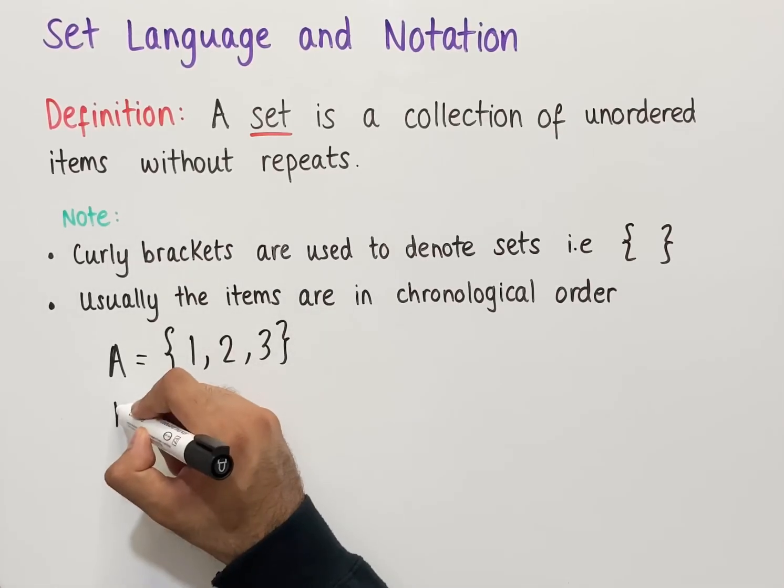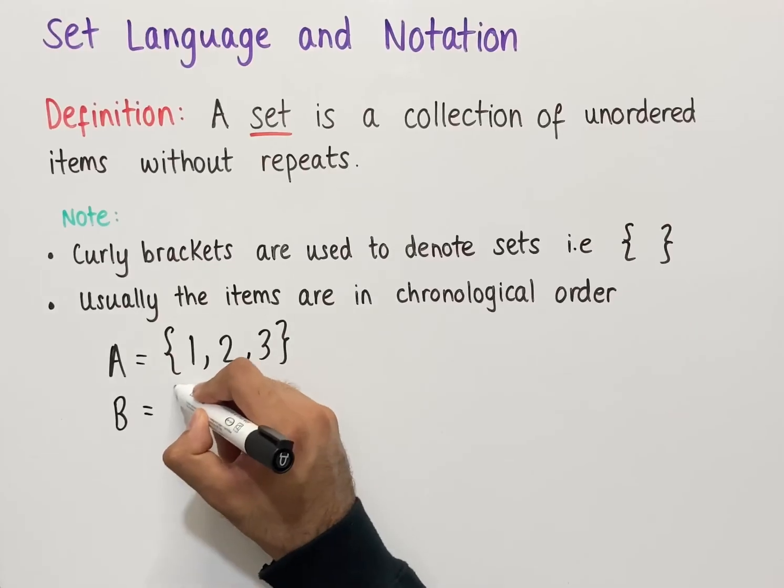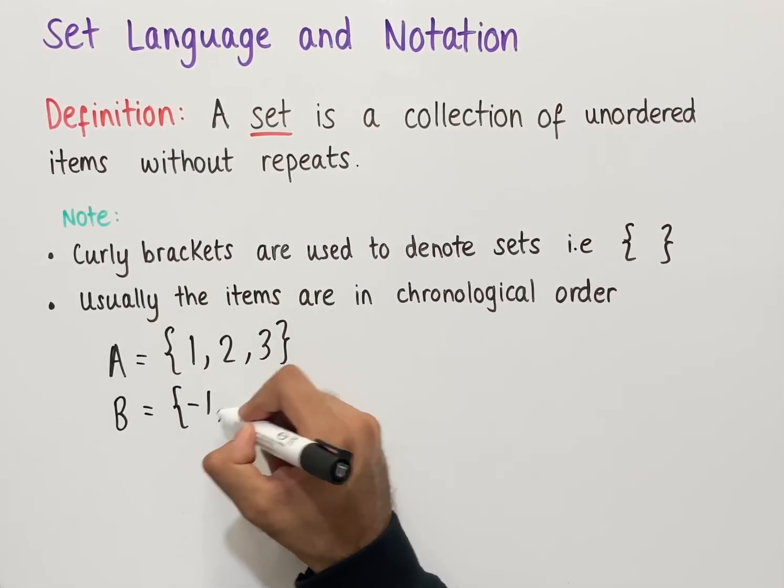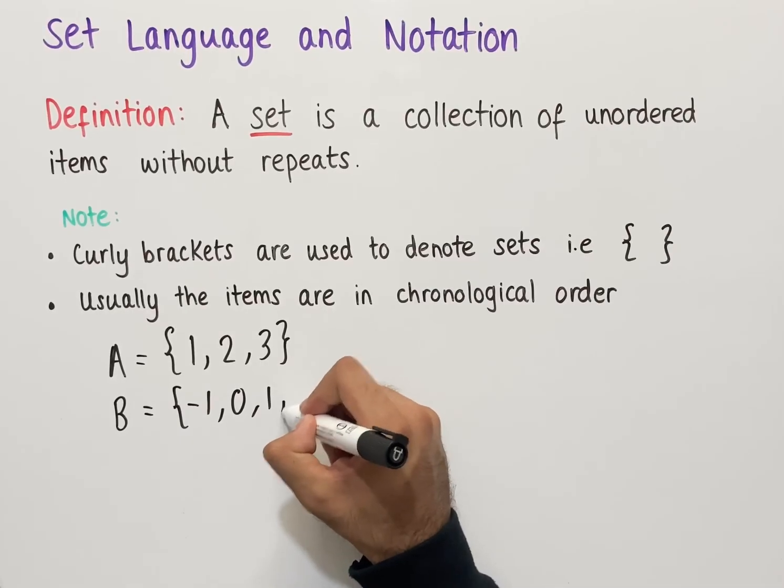We could also have set B. Again we use curly brackets and we could have this time -1, 0, 1, 2.